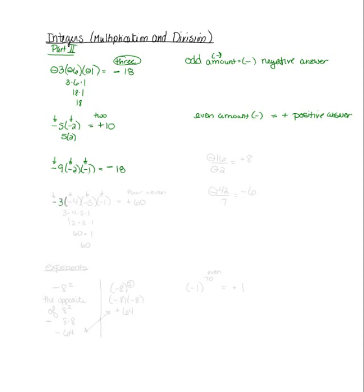If I had negative three times negative four times negative five times negative one, I count one, two, three, four negatives. Four is even, so my answer is going to be positive. Then I just do three times four times five times one. Three times four gives me twelve; twelve times five gives me sixty; sixty times one gives me sixty. So our answer is going to be positive sixty.